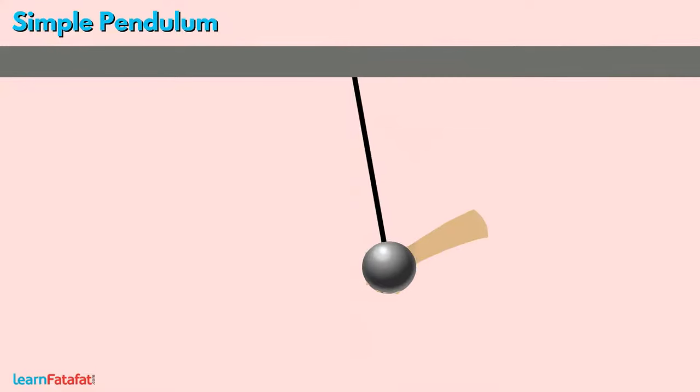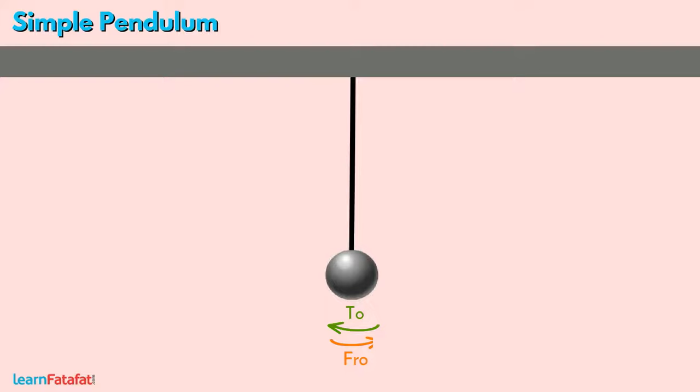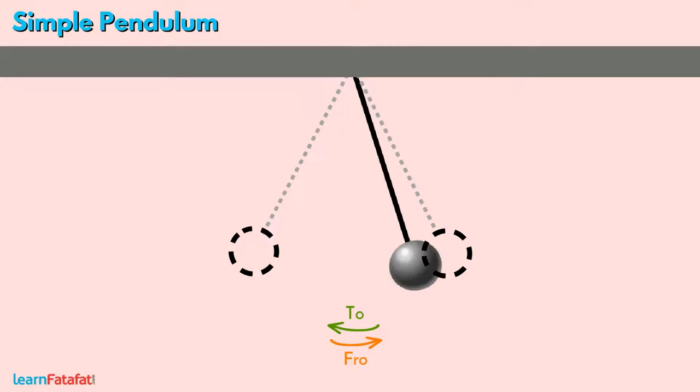When the bob is taken to one side and released, it starts moving to and fro. During motion, there are two positions where the bob stops and changes its direction. These positions are called extreme positions of the pendulum. Let's denote them by A and B.